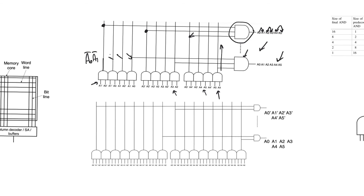We need 12 AND gates in the pre-decoder, and as many AND gates in the final decoder as there are outputs — 64 for a 6-bit decoder. We chose a 2-bit pre-decoder and a 3-input final decoder, but we can also choose a 3-bit pre-decoder and a 2-input final decoder. Comparing the two, we're trading off the complexity between the pre-decoder and the final decoder: bigger pre-decoder gates produce simpler final decoder gates.